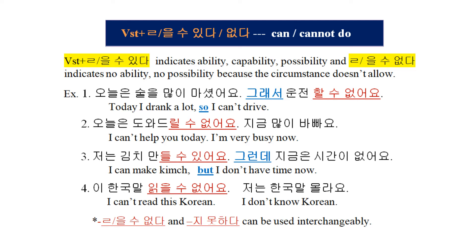Example 2: 오늘은 도와드릴 수 없어요. 지금 많이 바빠요. — I can't help you today. I'm very busy now. Example 3: 저는 김치 만들 수 있어요. 그런데 지금은 시간이 없어요. — I can make kimchi, but I don't have time now.